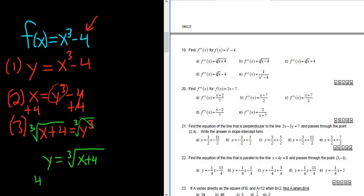So these cancel. So we get y equals the cube root of x plus 4. And if you want to be super perfect, you can include a fourth step. So f inverse of x is equal to the cube root of x plus 4. So that should be the correct answer.